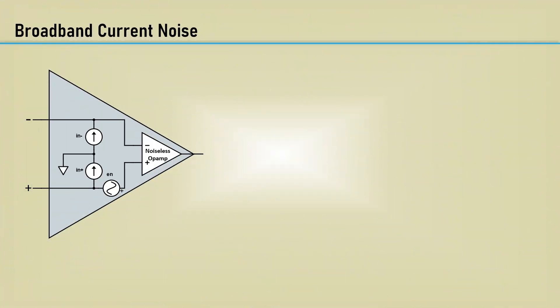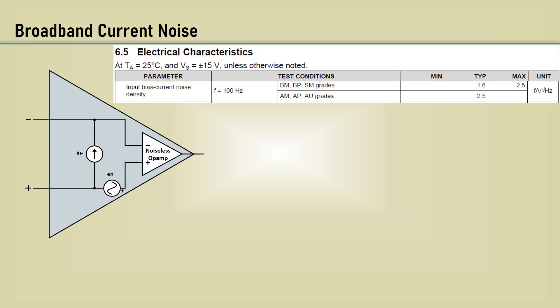Here is the current noise model for an op amp. It can be simplified as a single differential current source. The input bias current noise density can be found in the datasheet.